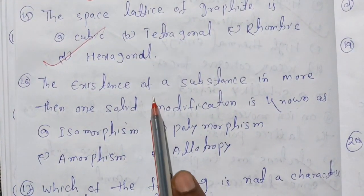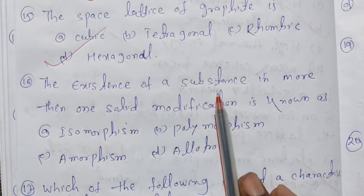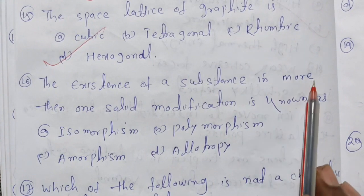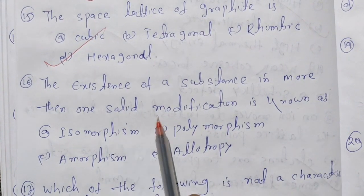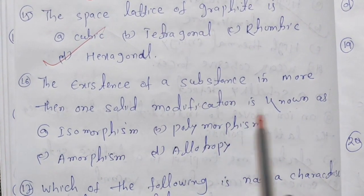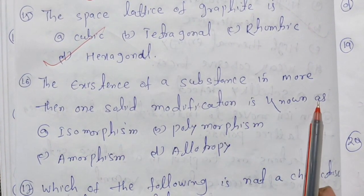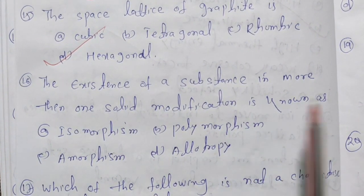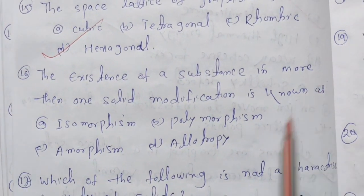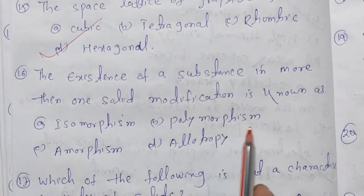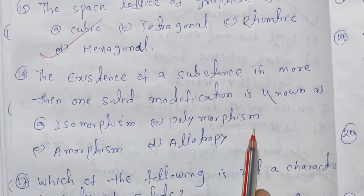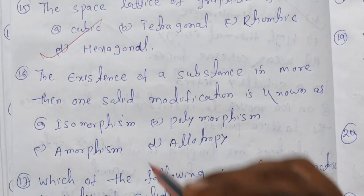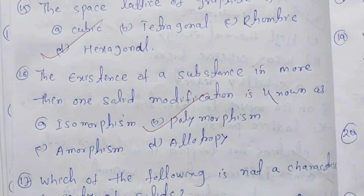The existence of a substance in more than one solid modification is known as polymorphism. So the answer is polymorphism, and option B is our answer.